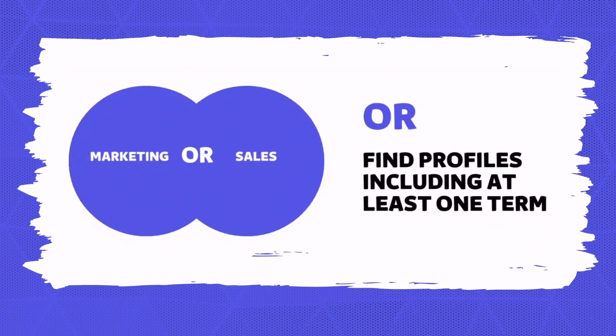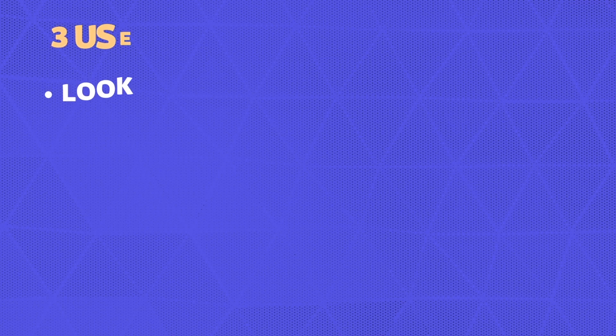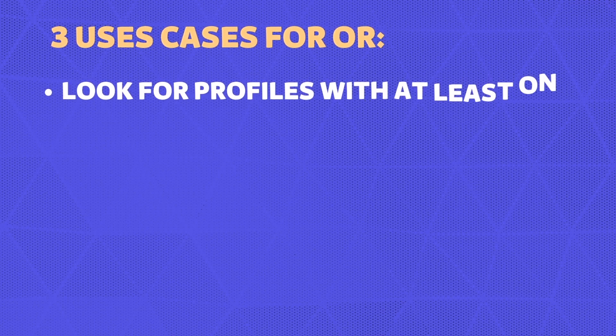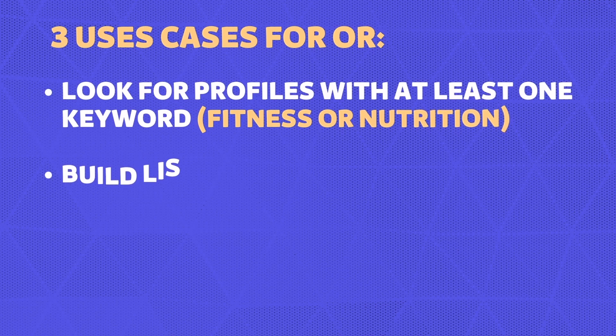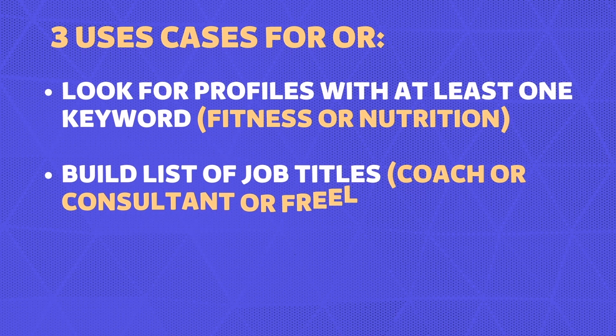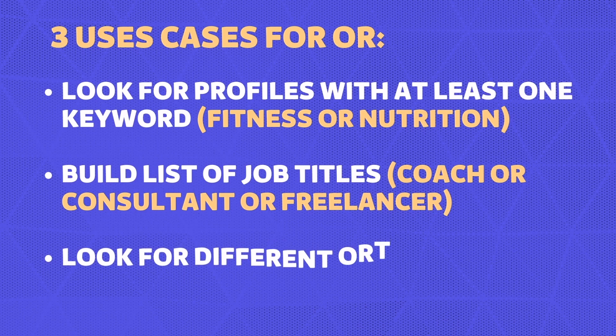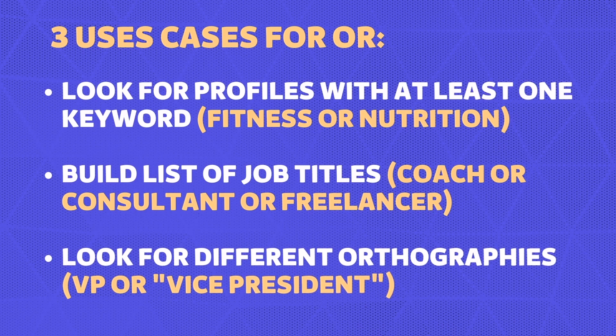Let's start with OR. OR means 'either', so if you use OR you will have in your search results all the people that have at least one of the keywords in your list on their profiles or job titles. You can use OR if you are looking for at least one keyword, like 'fitness OR nutrition', or to build lists of job titles like 'coach OR consultant OR freelancer', or to look for different acronyms for the same word like 'VP OR vice president'.